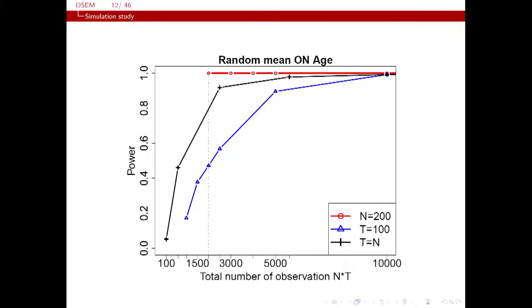Results are shown with total observations N×T on the x-axis and power on the y-axis, with three cases plotted. For example, at 2,000 total observations with N=200 (200 individuals measured 10 times), power is close to 1. But with T=100 (20 individuals measured 100 times), power is less than half. So for this coefficient, having more individuals measured fewer times gives substantially better power than few individuals measured many times.